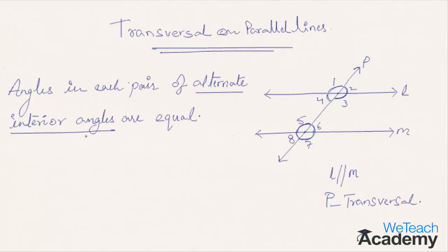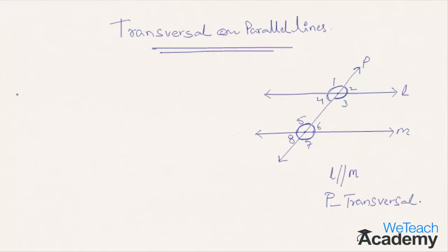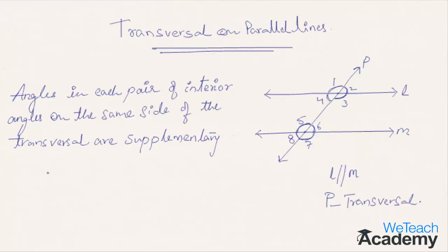That is, angle three equals angle five and angle four equals angle six. Since alternate interior angles are equal, angle three equals angle five. We also know that angle three plus angle four equals 180 degrees, as these angles lie on line L and form a linear pair, making them supplementary. By substituting, angle five plus angle four also equals 180 degrees — these are the interior angles on the same side of the transversal. Therefore, angle four plus angle five equals 180 degrees, and angle three plus angle six equals 180 degrees.